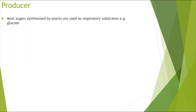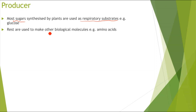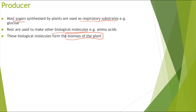Looking at the producer: most of the sugars synthesized by the plant are used as respiratory substrates, such as glucose, which is the main substrate used in respiration. The rest, not used as respiratory substrates, are used to make other biological molecules — for example, amino acids. These biological molecules that are not used as respiratory substrates form the biomass of the plant.